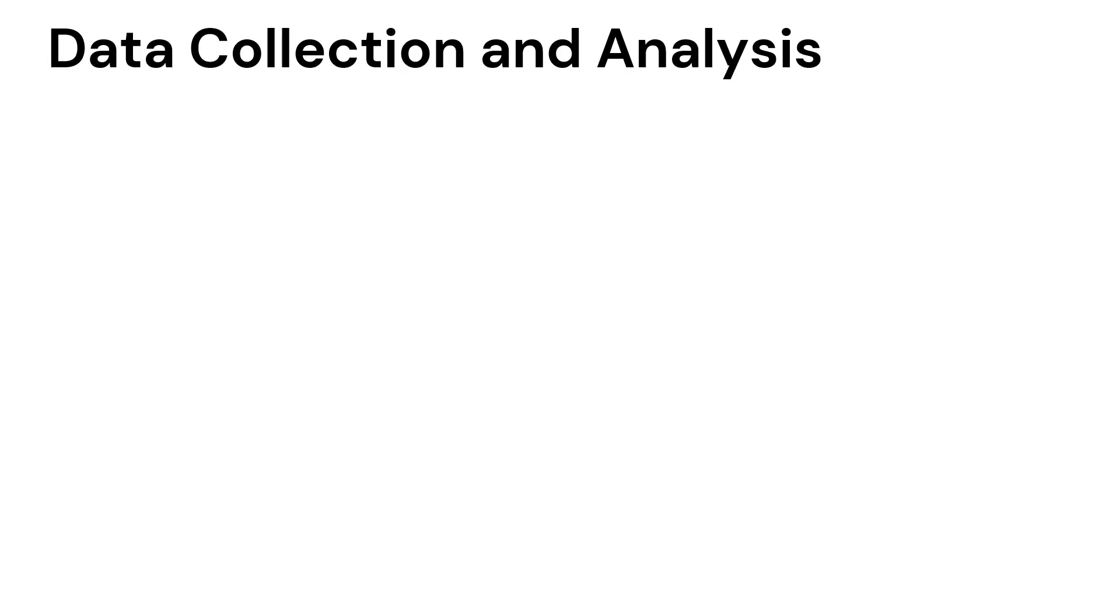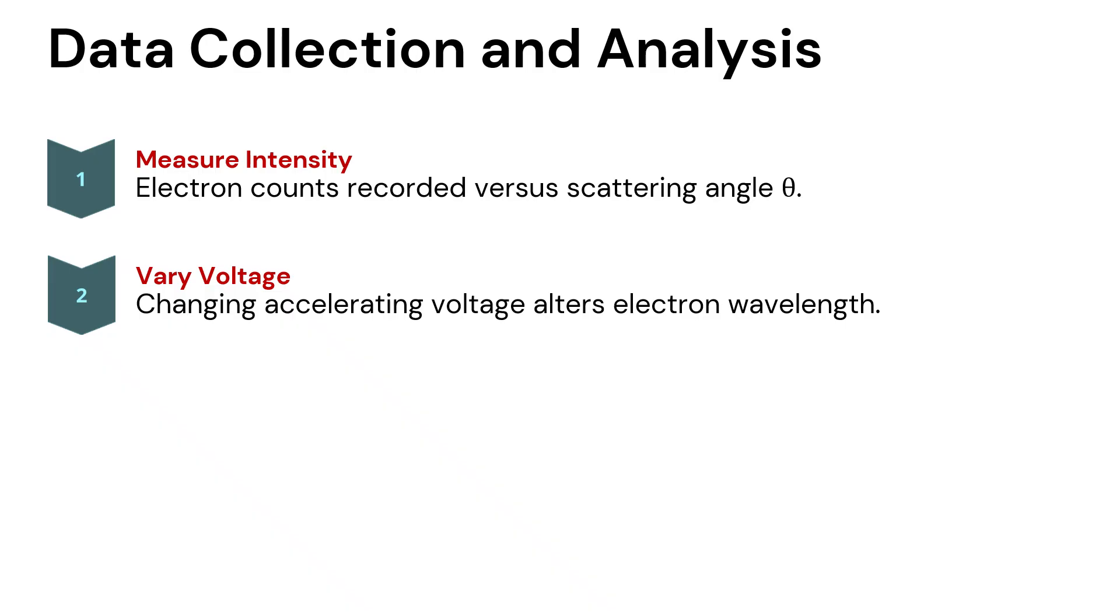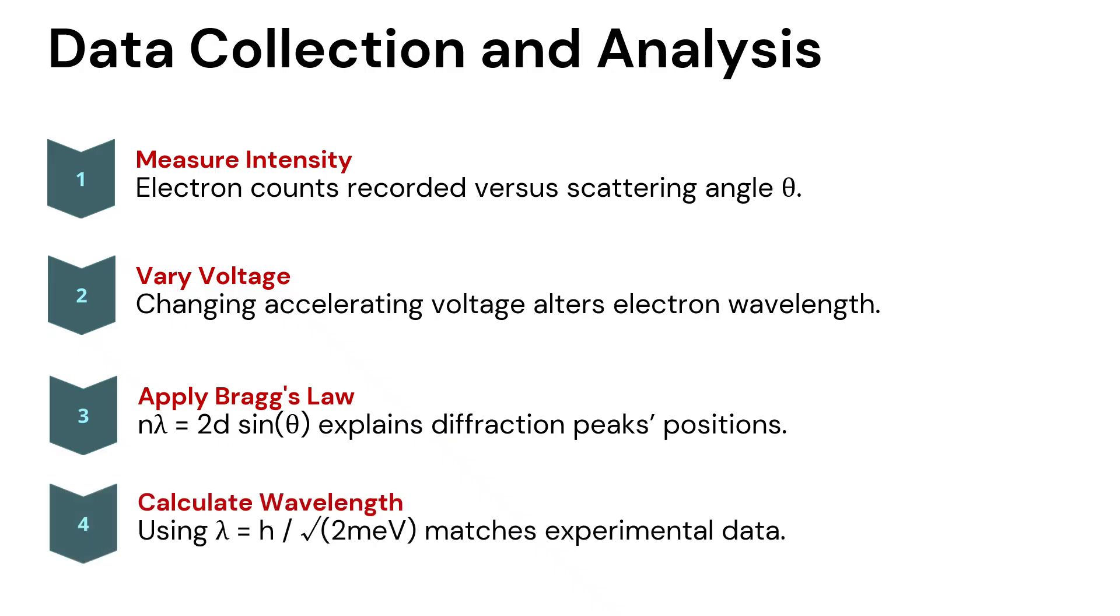Let's see how data is collected and analyzed with this experiment. First, electron count is recorded with respect to scattering angle theta, which measures the intensity of diffraction. Changing the accelerating voltage alters the electron wavelength. We may apply Bragg's law, n lambda equals 2d sin theta, and calculate the wavelength of the electrons from the formula lambda equals h divided by square root of 2mV.